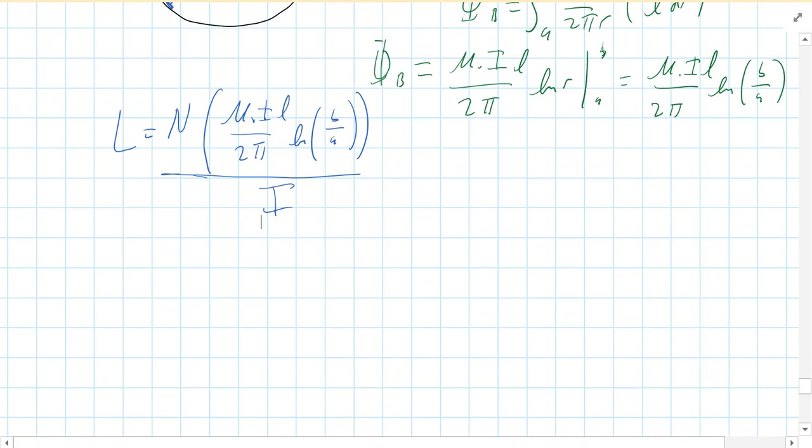As always, I, the current, should cancel out. Your inductance shouldn't depend on how much current you have flowing. So you end up with L equals N, which is one. So I'm going to ignore that from here on in. Mu naught L over 2 pi natural log of B over A.